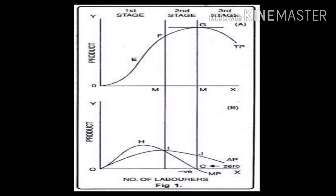Look at the screen — this is the curve. In this curve, Phase 1 is from O to E: TP is increasing at an increasing rate and MP is also increasing. In Phase 2, between E and F: TP increases at a decreasing rate, then MP becomes zero when TP is at its maximum — at point G. In Phase 3, after point G, TP starts decreasing, and MP not only falls but becomes negative.